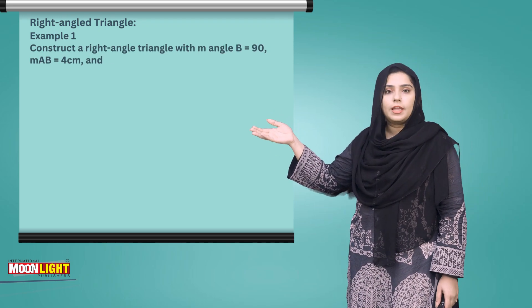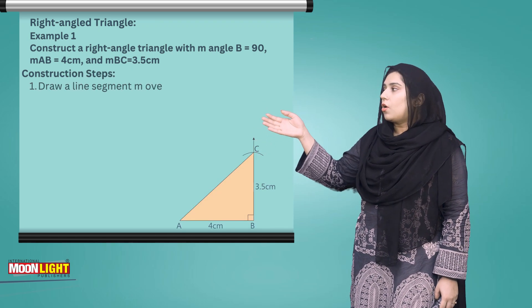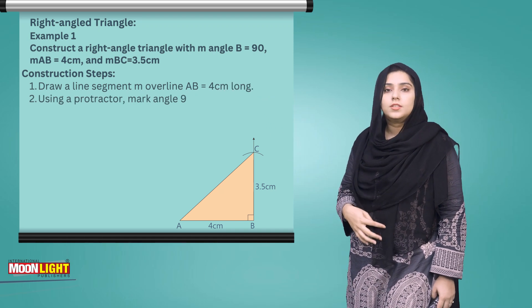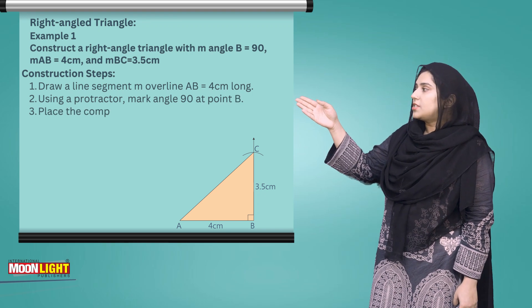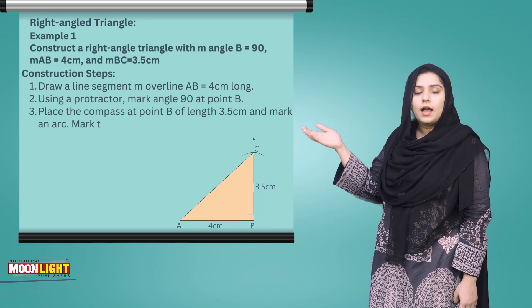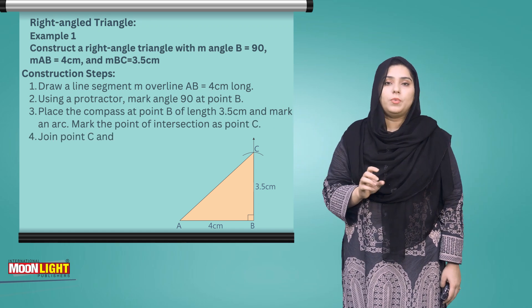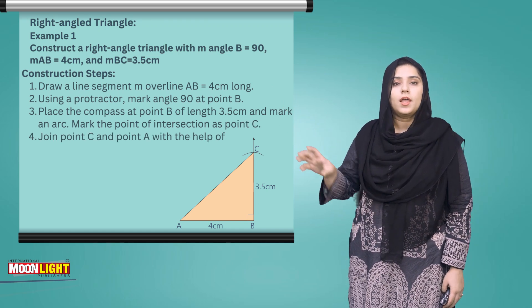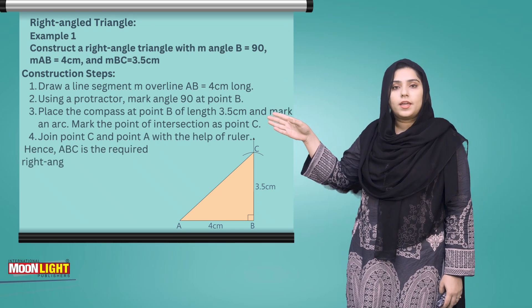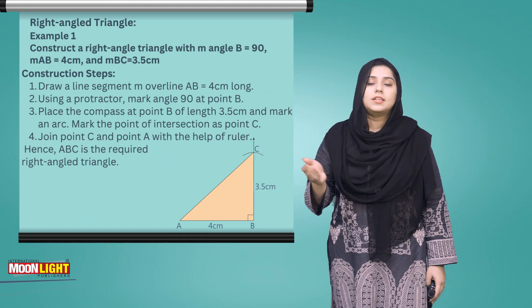First of all, draw a 4 cm line AB. Then, at point B construct a 90 degree angle using a protractor. Now, at point B where AB is 4 cm and BC is 3.5 cm, construct the 90 degree angle. Then, mark 3.5 cm on the line from point B. Join point C and point A with the help of a ruler to complete the right angle triangle.